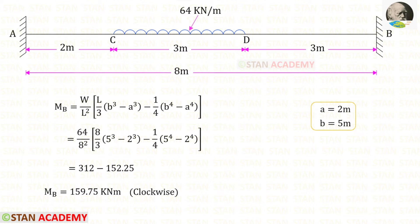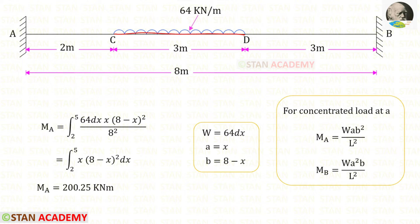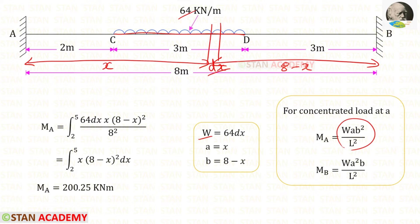The formulas to find MA and MB are very difficult to memorize. Alternatively, we can do integrations to find MA and MB. We know that if in a fixed beam a concentrated load acts at a distance A, there are formulas to find MA and MB. We are going to apply these two formulas over the portion where the UDL is acting. Consider a small element DX at a distance X from point A, so the remaining distance is 8 minus X. For this element, W is 64·DX, A is X, and B is 8 minus X.